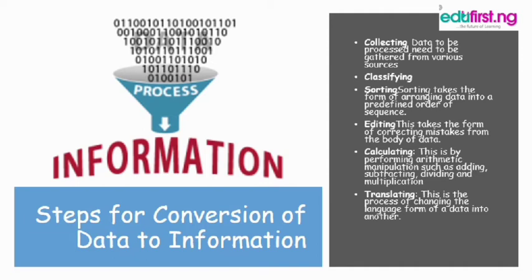Before information is produced, the data should first be collected — that is, data to be processed needs to be gathered from various sources. This data should then be classified, for example based on how many males, how many females, how many children, and how many adults. Then the data should be sorted — sorting takes the form of arranging data into a fully defined order or sequence. The data should also be edited — this involves correcting mistakes from the body of the data — and then calculations and translating are performed.